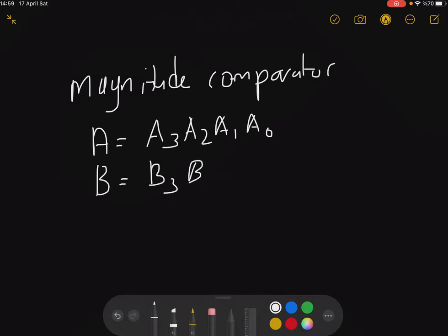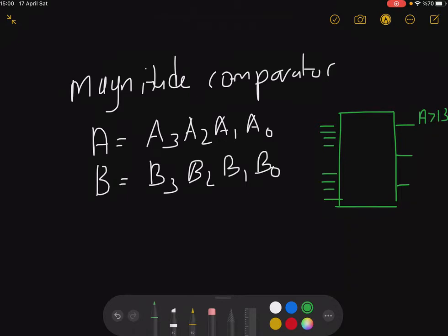So we have A equals A₃A₂A₁A₀ and B equals B₃B₂B₁B₀. What we're trying to do here is build a circuit that inputs those two numbers, two four bit numbers, and decides whether A is greater than B or A is equal to B or A is less than B.